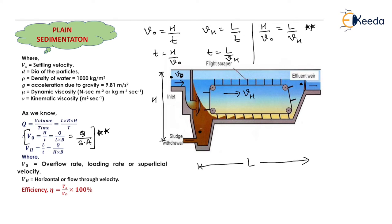The efficiency of the plain sedimentation tank is the ratio of output to input multiplied by 100. The output is represented by the settling velocity Vs and the input by the overflow rate V₀. Therefore, efficiency = (Vs / V₀) × 100%.